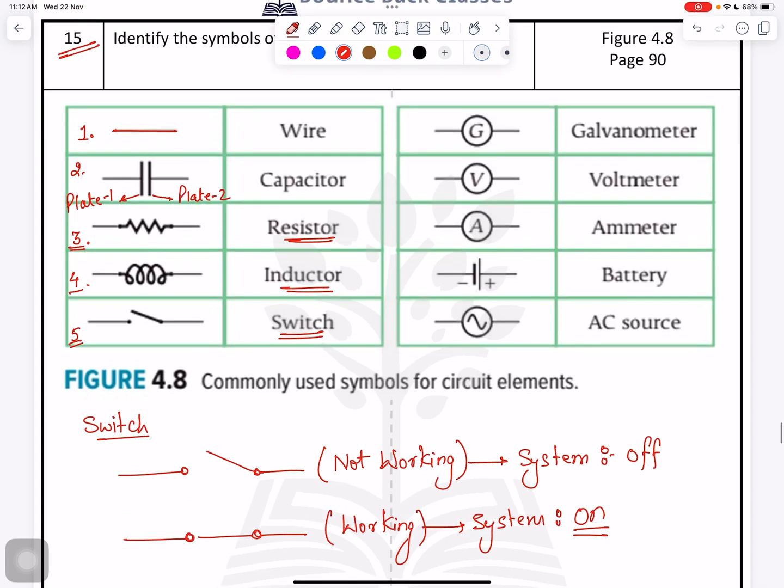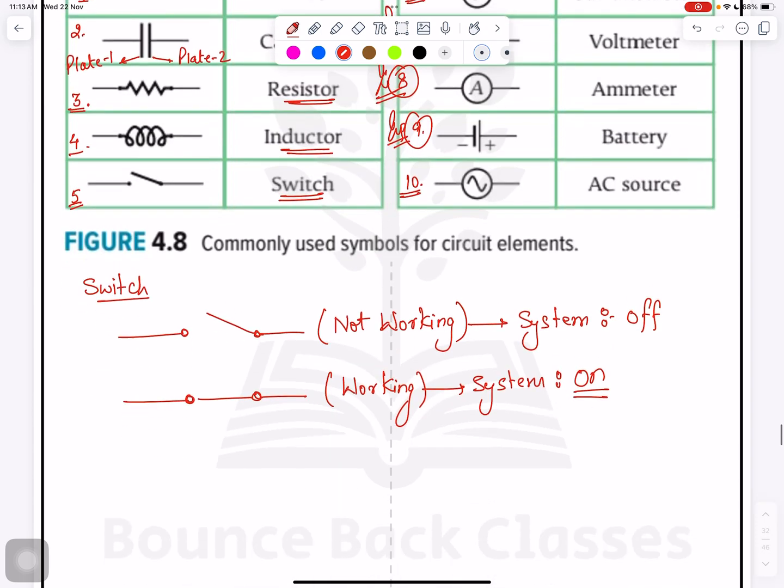After that, G is the galvanometer. Seven, this is important. Voltmeter. Eighth, this is also important - ammeter. Ninth is your battery, this is important, I'm going to explain this. Tenth is your AC source. Now guys, what you need to understand - point number seven, what we have, we have voltmeter.